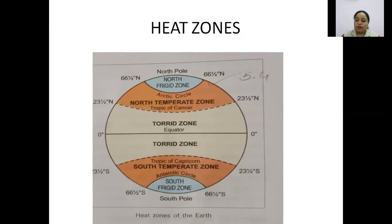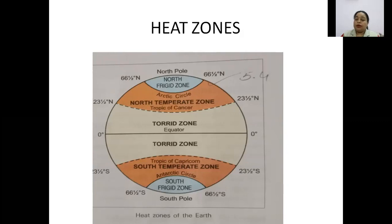The first is the torrid zone. The torrid zone lies between 23 and a half degrees north and 23 and a half degrees south — the light yellow color around the equator. It lies between the Tropic of Cancer and the Tropic of Capricorn. In this zone the sun rays fall vertically — they are straight, not slanting — upon these areas.